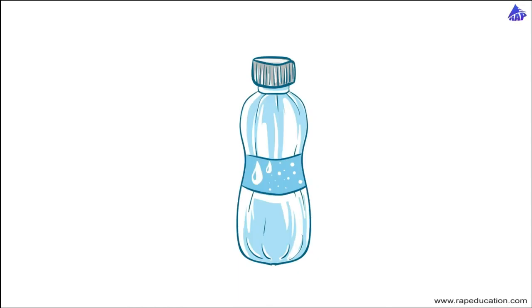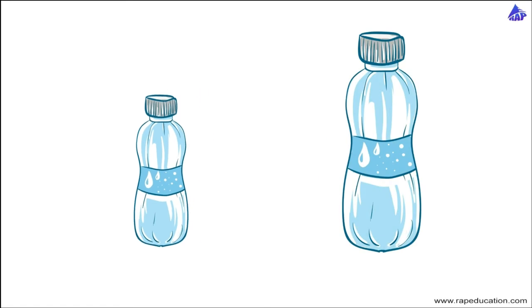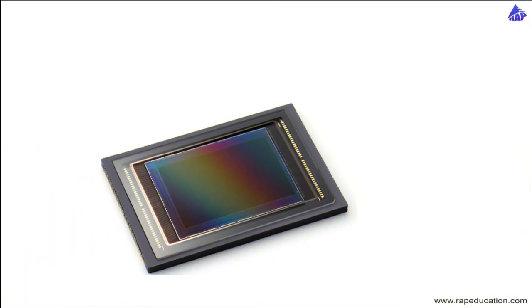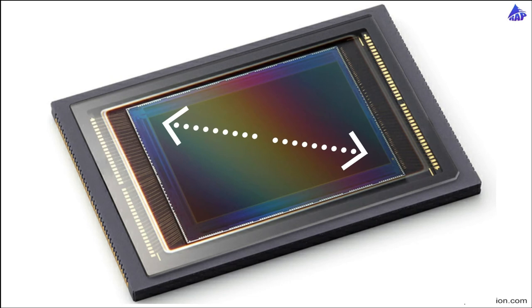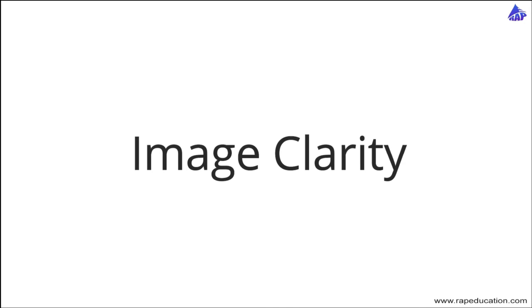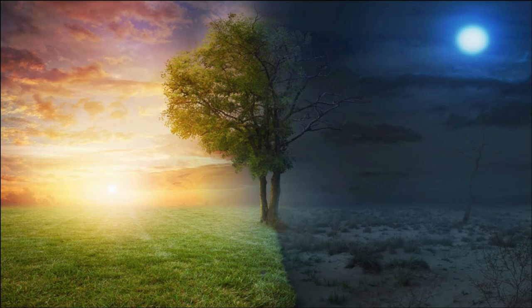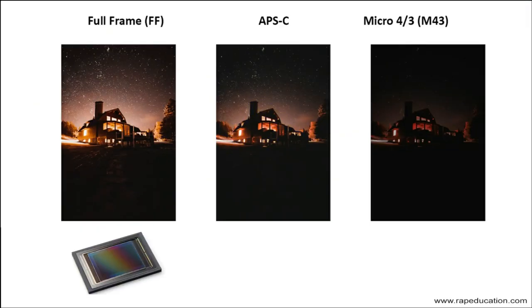Let's imagine the image sensor as a water container. If I give you two different containers of different sizes, the bigger one would contain more water than the smaller one. The sensor of the camera works the same way — it is a container of light. Dimension-wise, the full frame has greater space to contain light reflections, so it provides better results when we have a limited light source. A larger image sensor can therefore provide much better results than a smaller one in low light conditions.